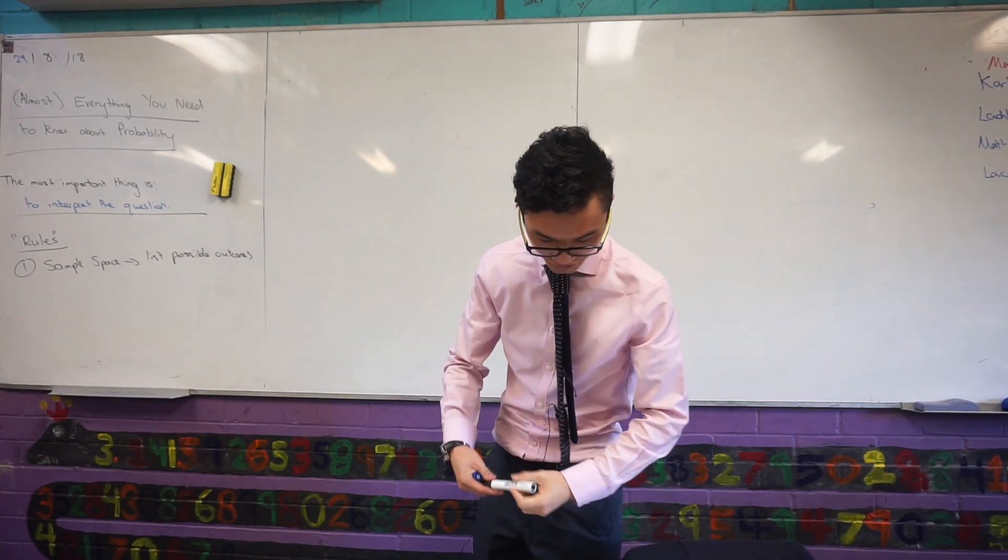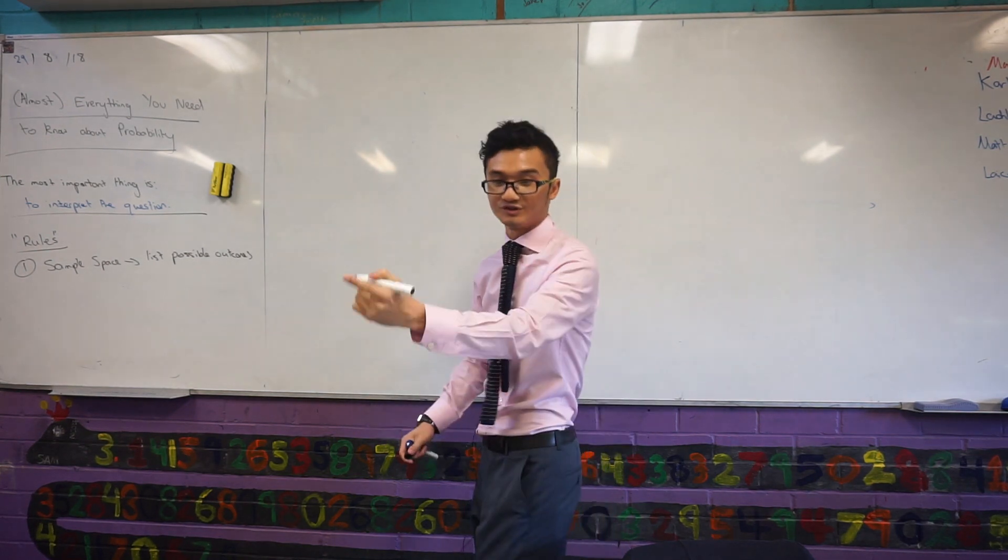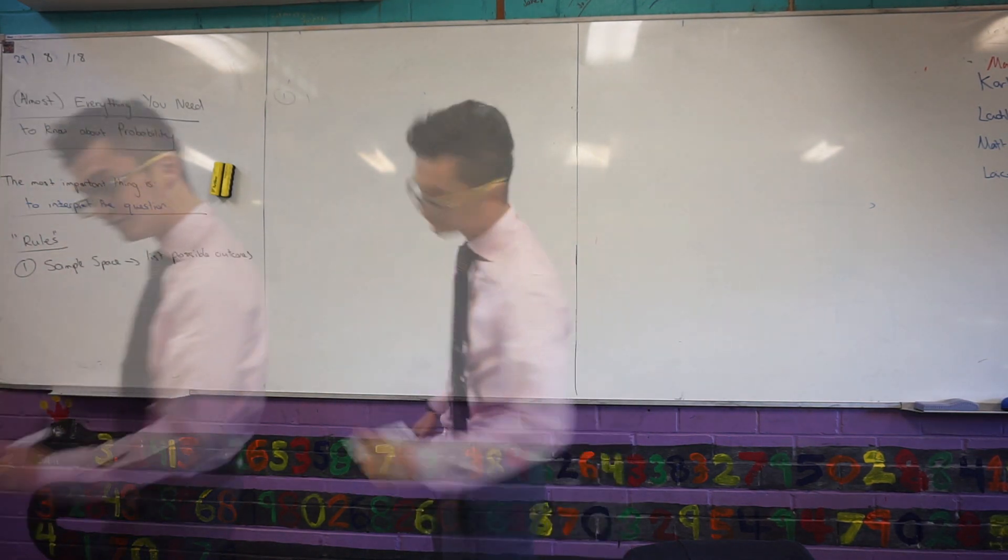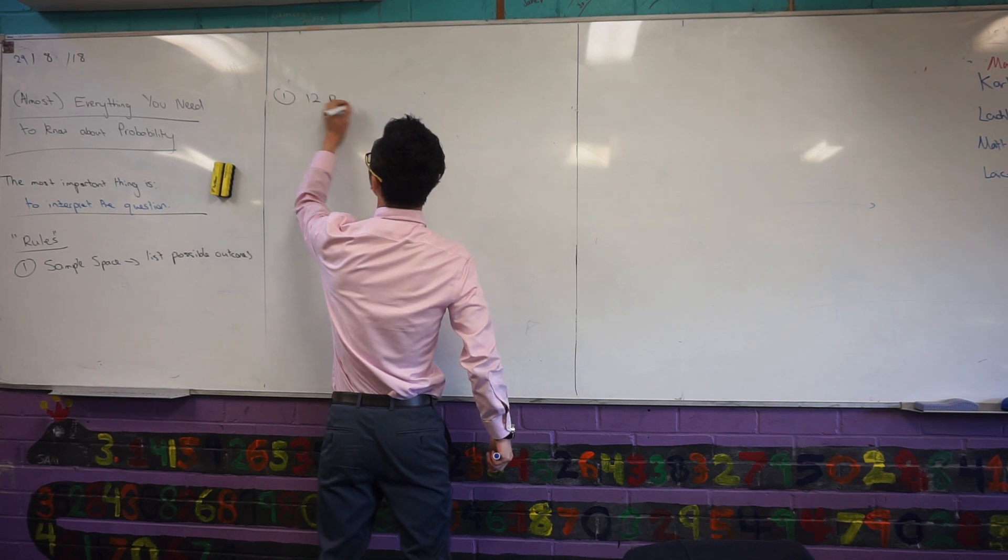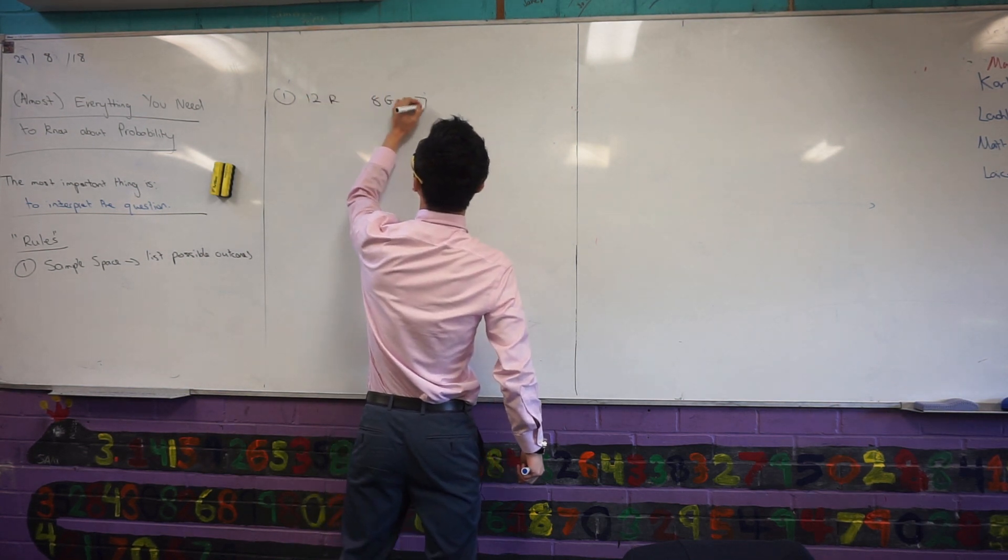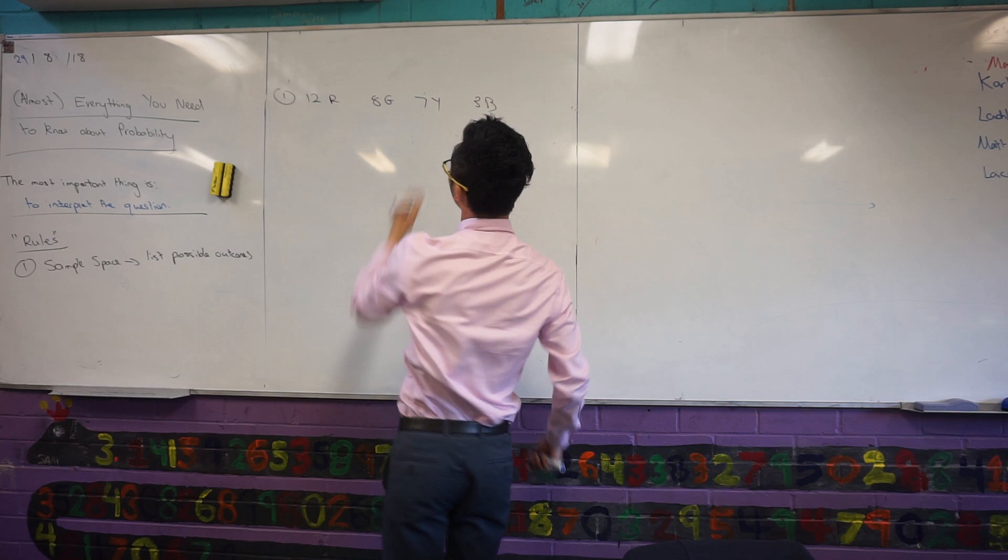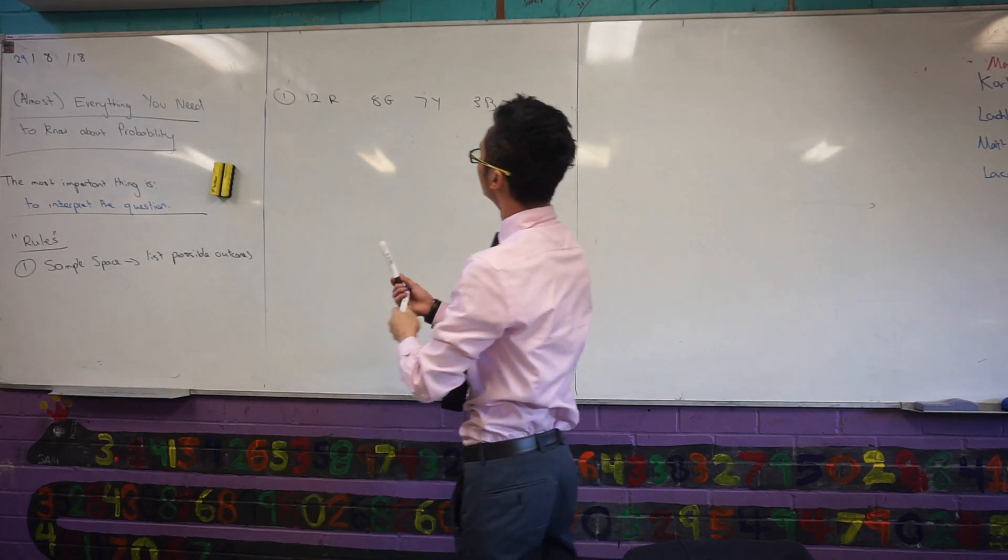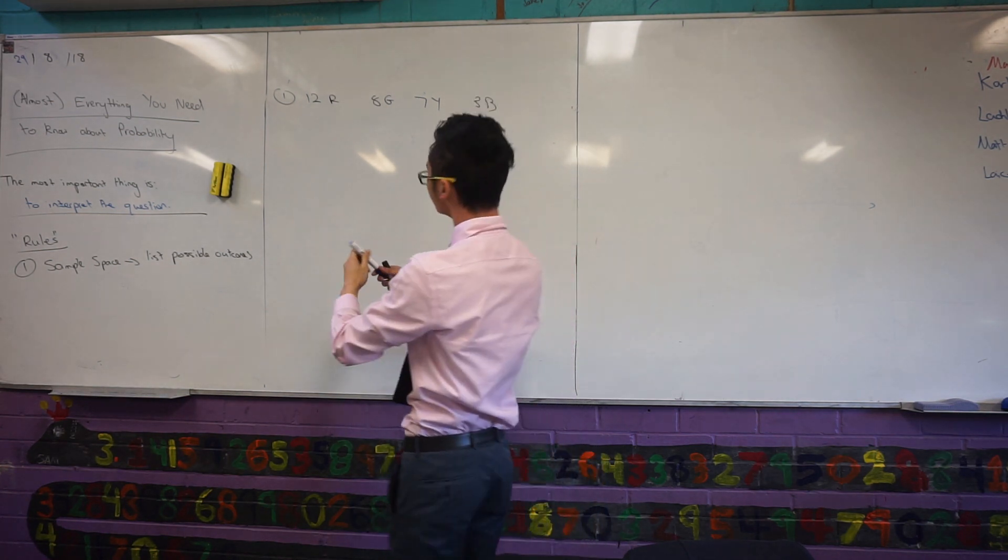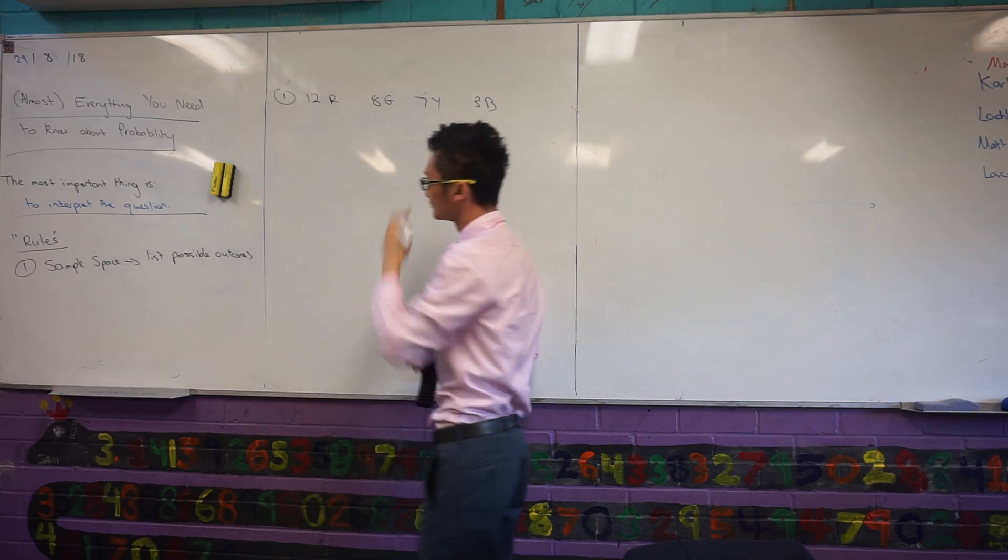If I look at the first question there. Jesse, can you read it out for me, the first question? Four green, twelve red, eight green, seven yellow, and three black jelly beans. One jelly bean is selected from the packet at random. What is the probability of the selected jelly bean is red or yellow?